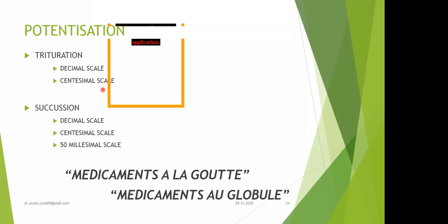Going back to the trituration for 1 hour: it is divided into 3 parts, and each section has 2 subsections totaling 10 minutes — where 6 minutes is used for trituration or rubbing, 3 minutes for scraping, and 1 minute for mixing. That is 6+3+1 = 10 minutes. This process is repeated, and every 20 minutes the second or third part of the vehicle is added.